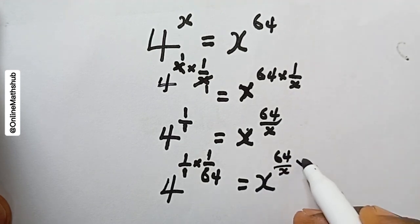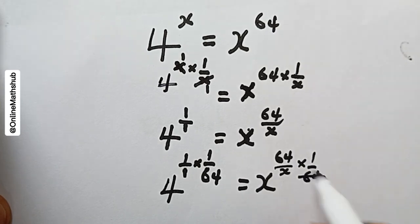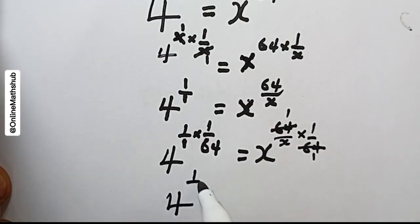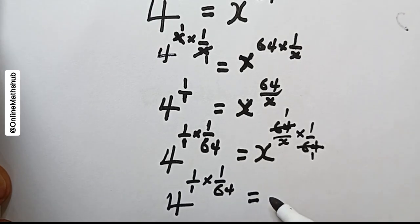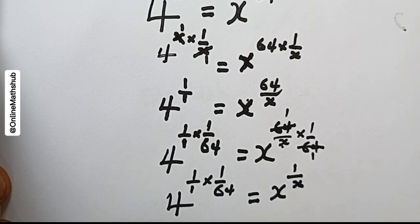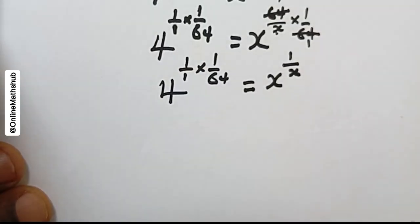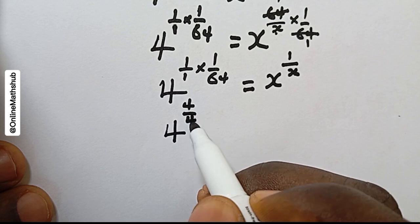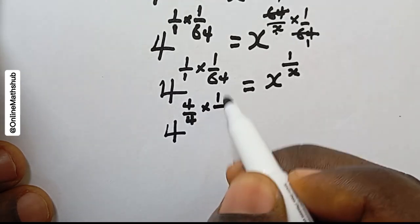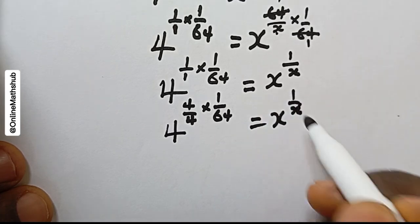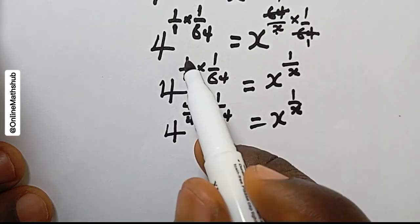Dividing both sides: on the right we have x to the power 64, divided by x, multiplied by one over 64. On the left, the 4 divides to give 4 to the power of one over x multiplied by one over 64. This simplifies so that we have 4 to the power one over one multiplied by one over 64, equal to x to the power one over x.